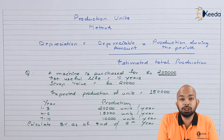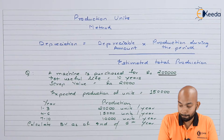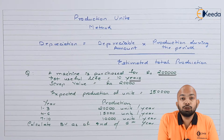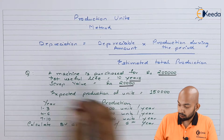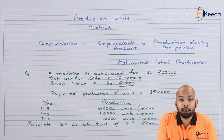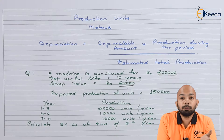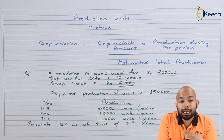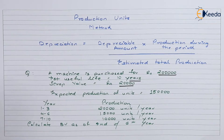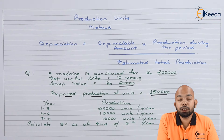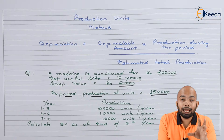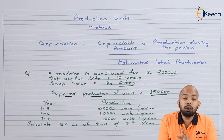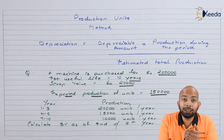The machine was purchased for Rs 2 lakhs. The useful life of that machine is 10 years. The scrap value of that machine is Rs 20,000 — that means after its useful life, the expected amount realizable is Rs 20,000. The expected production of units is 1,50,000, meaning we can produce on average 1,50,000 units using this machine during its whole tenure. The pattern of production per year has been mentioned below.